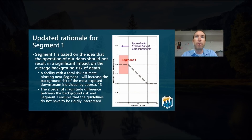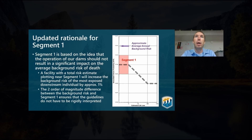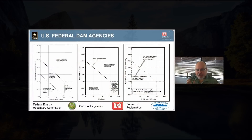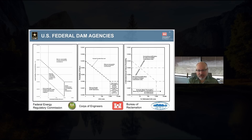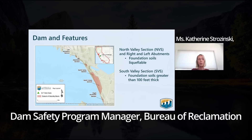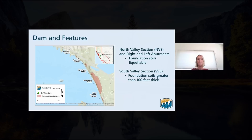The updated rationale for our supplemental rationale for segment one is based on the idea that the operation of our dams should not result in a significant impact on the average background risk of death for the most exposed downstream person. Basically, all the federal agencies have decided to approach looking at risks — how we calculate risks and how we portray risks — in a similar fashion. So there might be some differences between these charts, but they're essentially the same. These are all areas that we had identified that need to be modified to reduce those risks and be able to withstand an earthquake if it comes through.